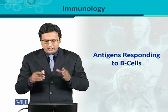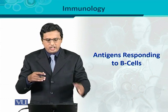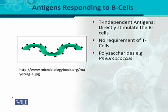Starting with antigen response to B cells — what kind of antigens do B cells respond to, meaning the nature of the antigens. B cells can recognize different varieties of antigens. Those antigens can be T-independent antigens. As the name suggests, these antigens do not require T cells for activation of B cells or for production of immunoglobulin. Such antigens belong to the carbohydrate family or are polysaccharide in nature.